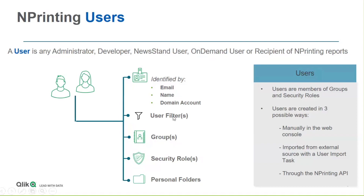We can assign users to be members of groups, which are distribution lists in nPrinting. We can also assign them capabilities, which are called security roles. The associations with filters, groups, and roles are central to the profile of an nPrinting user.